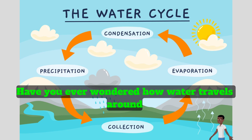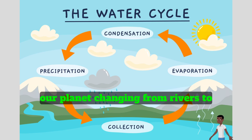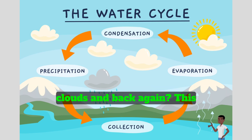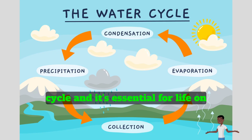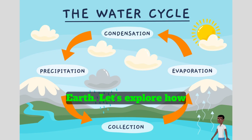Have you ever wondered how water travels around our planet, changing from rivers to clouds and back again? This fascinating journey is called the water cycle, and it's essential for life on Earth. Let's explore how it works.